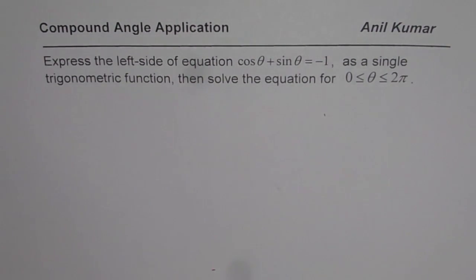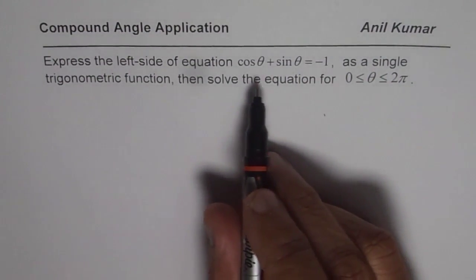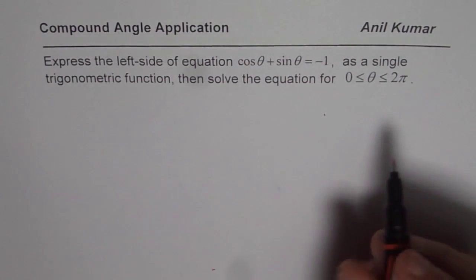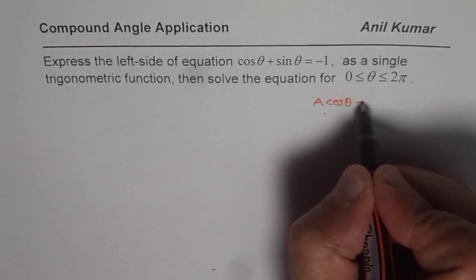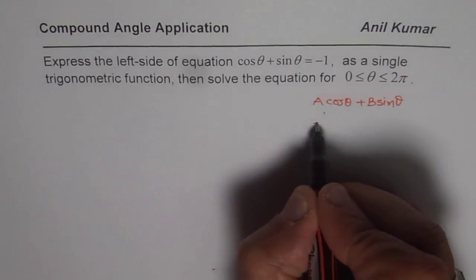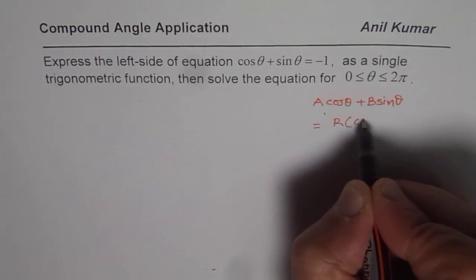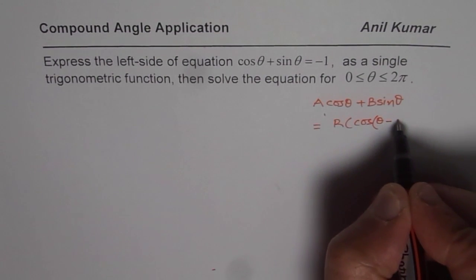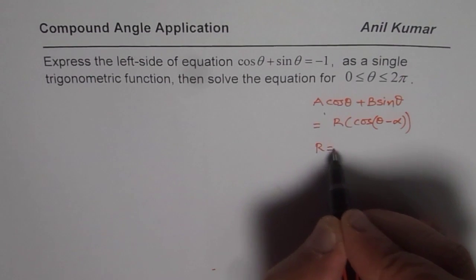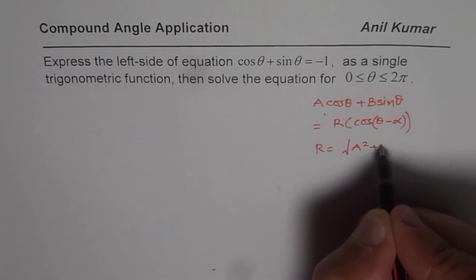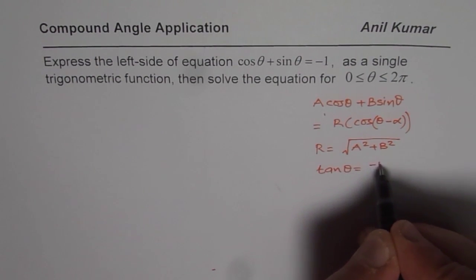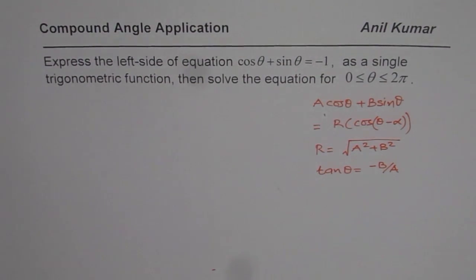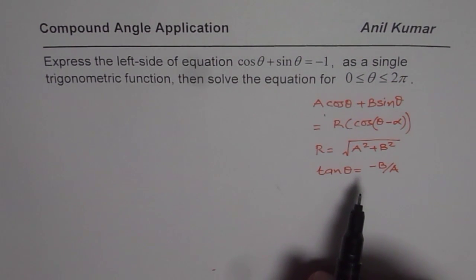Before beginning to solve this, let me tell you in general that what we are referring to is normally called a wave function, or sometimes a simple harmonic motion equation. In general, if we have an equation A·cosθ + B·sinθ, we can write this as r·cos(θ - α), where r equals the positive square root of A² + B², and α can be found using tanα = -B/A. This is the equation we are referring to in this video — it is extremely important.